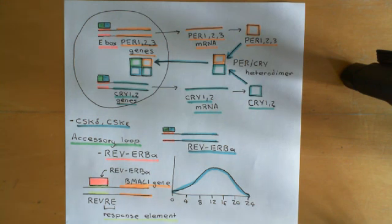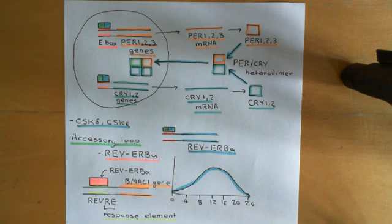So that now is the accessory loop done. In the next video, we will turn our attention to the great question of how you get synchronisation of these transcriptional-translational feedback loops, present in peripheral cells within the body, to the light-dark cycle.